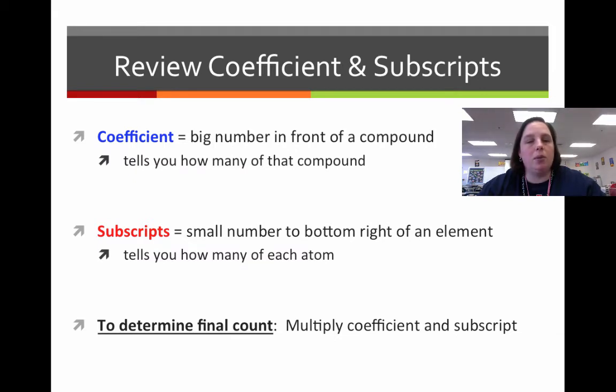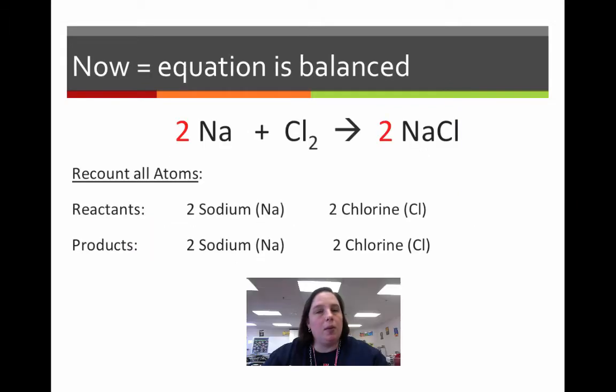Remember, to determine the final count of any element, you have to multiply the coefficient and the subscript. What happens if I were to put a 2 in front of the Na and then a 2 in front of the NaCl. So, now it's balanced, okay?